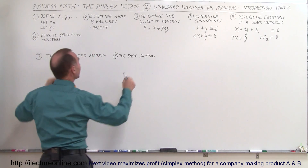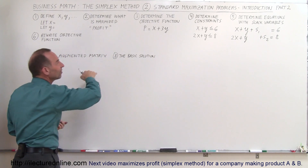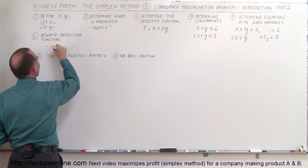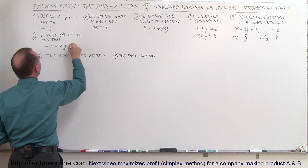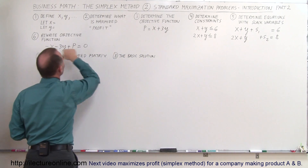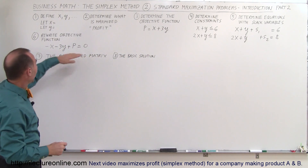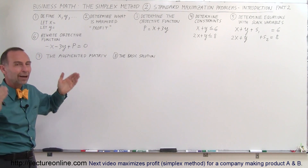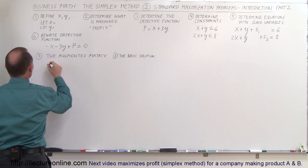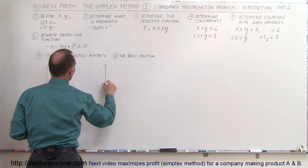Next, take the objective function and rewrite it so everything is on one side, set equal to zero: negative x minus 3y plus P equals 0. We move the x and 3y terms to the left side and it looks like that. Once we have the two constraint equations and the objective function rewritten, we can put everything into what we call an augmented matrix, also known as a simplex tableau.